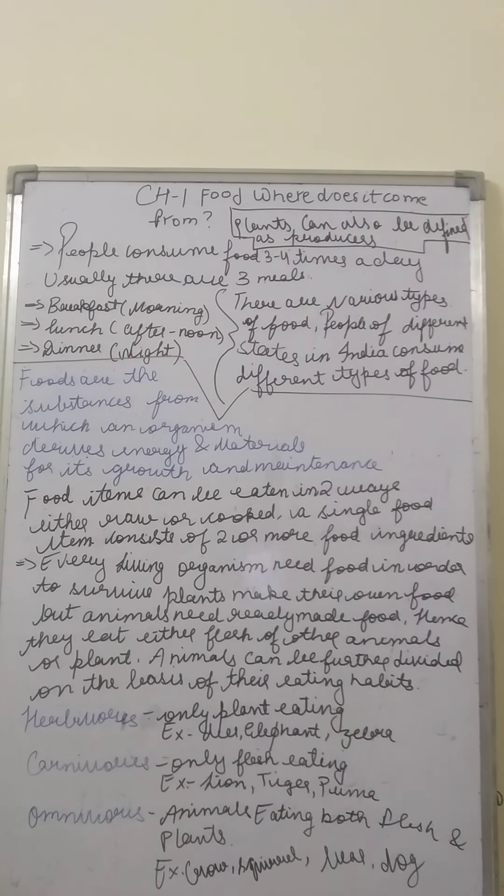All three meals — breakfast, lunch, and dinner — have different foods. Like in breakfast we may eat bread and jam and light things; in lunch we can eat paneer, chole, and similar dishes; and in dinner we can eat the same. This tells us that foods are of various types.